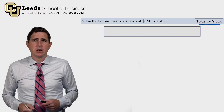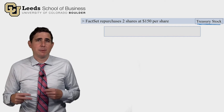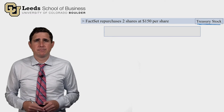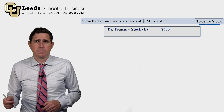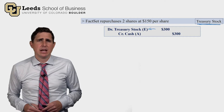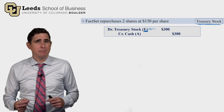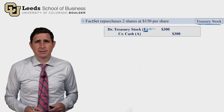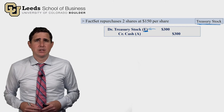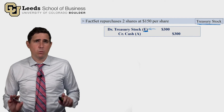Treasury stock is when a company purchases its own shares back from the market. FactSet repurchases 2 shares at $150 per share — 2 times $150 is $300. We debit the treasury stock account and credit cash for $300. Treasury stock is an equity account, but unlike typical equity accounts with credit balances, it carries a debit balance because we bought the shares back.